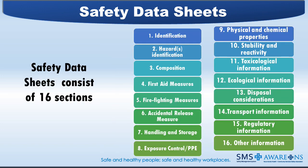The Safety Data Sheet consists of 16 sections, and these are now standardized so that the sections are always the same and in the same order.